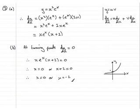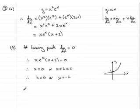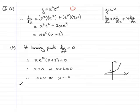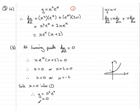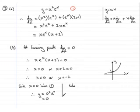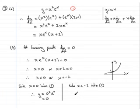The question asked for coordinates, so we need the y-values too. Since y equals x squared e to the x — call that equation 1 — substituting x equals 0 into equation 1 gives y equals 0 squared times e to the power 0, which is 0. So one turning point is at (0, 0). Then substituting x equals minus 2 into equation 1 gives y equals minus 2 all squared times e to the power minus 2.